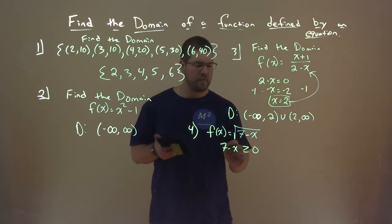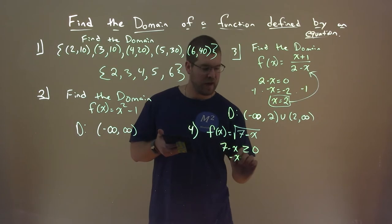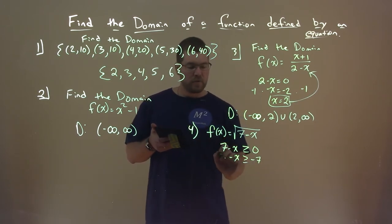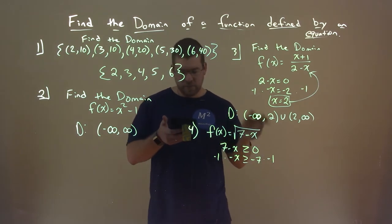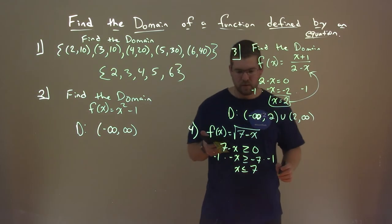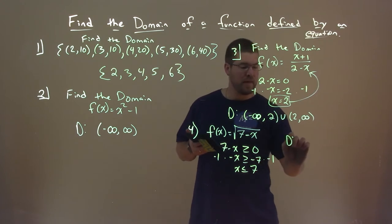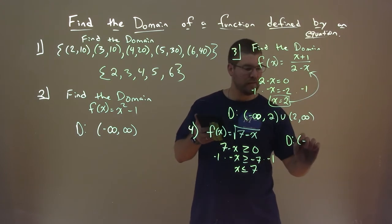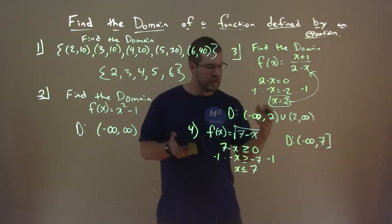Subtract 7 from both sides: negative X is greater than or equal to negative 7. Multiply both sides by negative 1 — remember, that flips the inequality. X is now less than or equal to positive 7. So X can be less than or equal to 7, and that is our domain: negative infinity to positive 7, including 7.